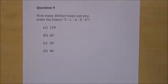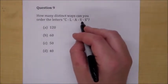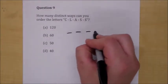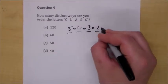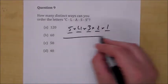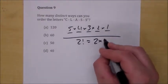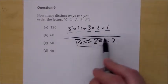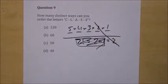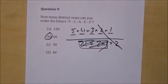Question nine: how many distinct ways can you order the letters of 'CLASS'? There will be duplicates because it doesn't matter which S comes first. We start with five factorial — 5 × 4 × 3 × 2 × 1 — and divide by two factorial for the two S's, which equals 2. We can cancel the 2s, leaving 5 × 4 × 3 = 60.